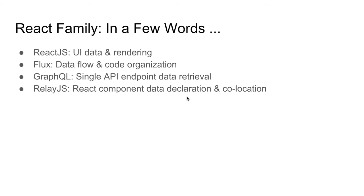The React family consists of ReactJS, which is a model for handling UI data and rendering the data. When ReactJS components become complicated, we can use Flux or Redux to organize our code better and improve or simplify data flow to make debugging easier. GraphQL is an alternative to REST API, where a single endpoint is capable of serving all the data required. Finally, RelayJS enables your React components to have their data declared and co-located.